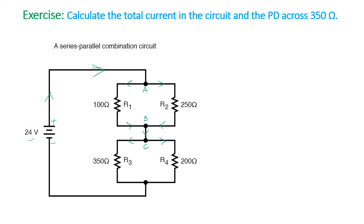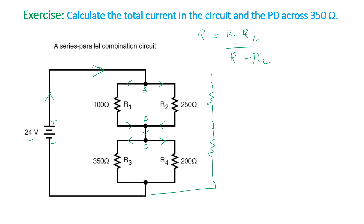This division of current at junction A means R1 and R2 are in parallel, so use the formula R = R1 times R2 over R1 plus R2. Similarly, the division at junction C means R3 and R4 are in parallel — use the same formula. Combining R1 and R2 gives one equivalent resistor R-prime; combining R3 and R4 gives R-double-prime. These two are then in series, so add them to get the total resistance.